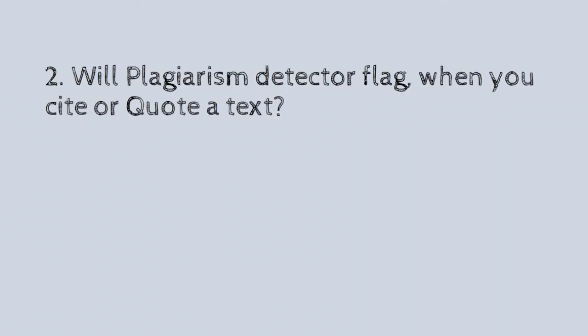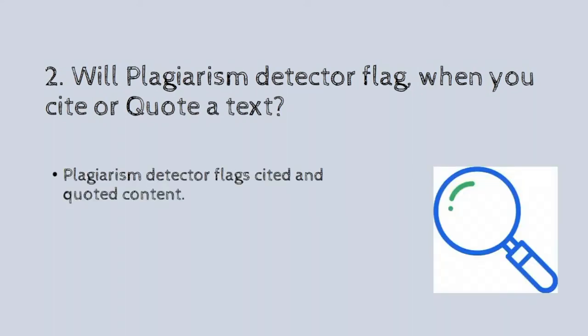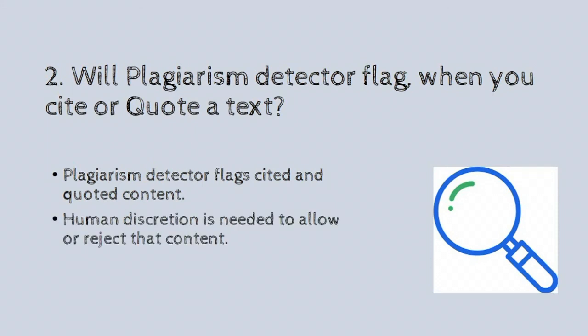The second question: will a plagiarism detector flag content when you cite or quote a text? Yes, plagiarism detectors flag cited and quoted content as well. Human discretion is needed to allow or reject content flagged by a plagiarism detector. But sadly, most journals and universities do not have this human discretion model — they just look at the numbers. They arrive at these numbers by matching words and the order of words with available literature through internet sources.